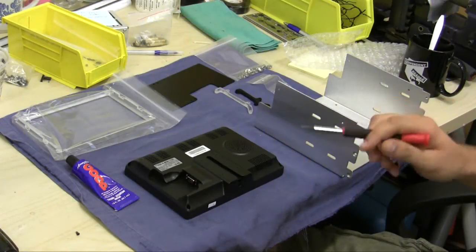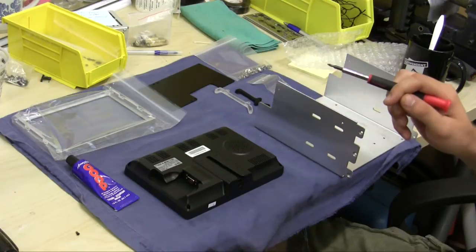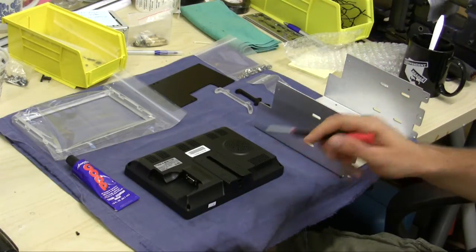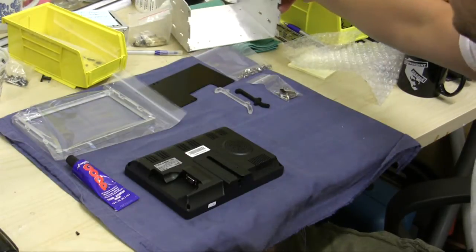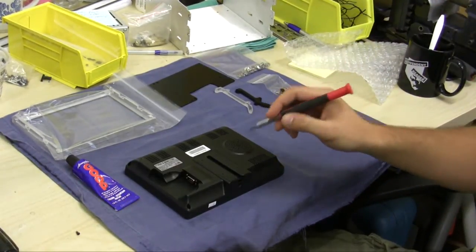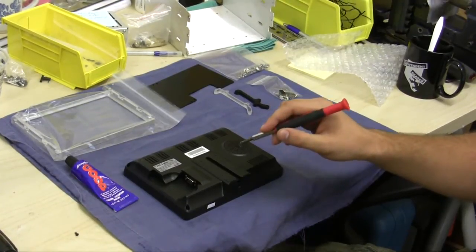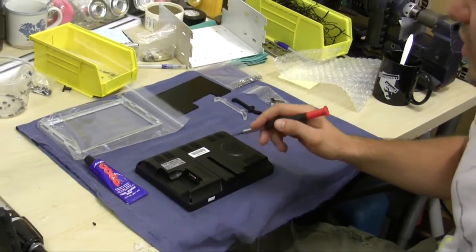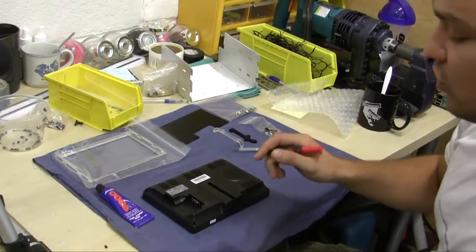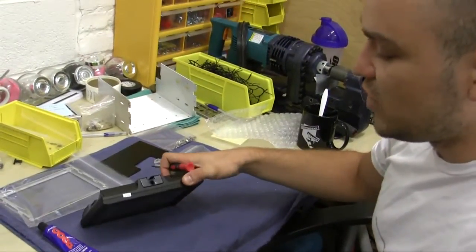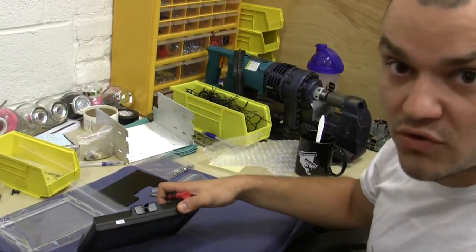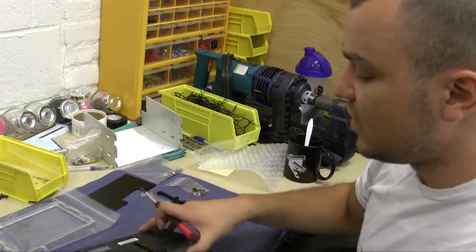The first thing that we're going to do is disassemble the Lilliput 7-inch monitor. Before I start disassembling, I'm going to warn you: you're going to need to crack it open which means you're going to void your warranty. I would definitely make sure that it works first.